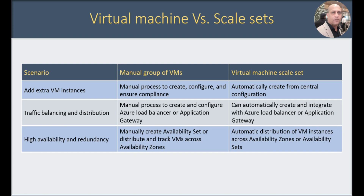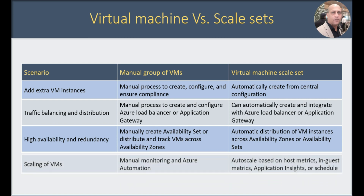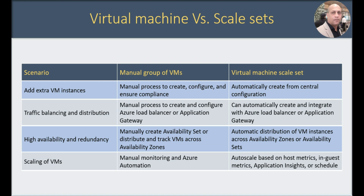For high availability and redundancy, it's manual work to create an availability set or distribute and track VMs across availability zones when you manage on your own. In a VM scale set, automatic distribution of VM instances across availability zones or availability sets happens for you. For scaling, it involves manual monitoring and Azure automation when managing your own group of VMs, whereas in a virtual machine scale set, auto scale is based on host metrics, in-guest metrics, application insights, or event schedule.